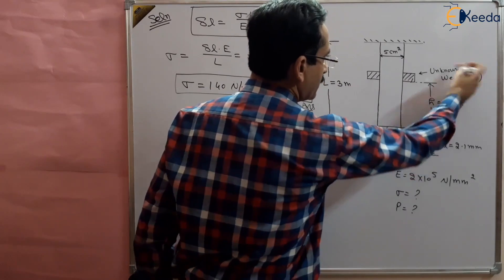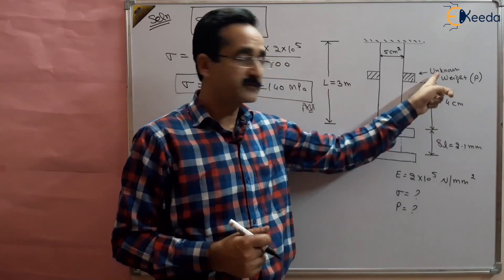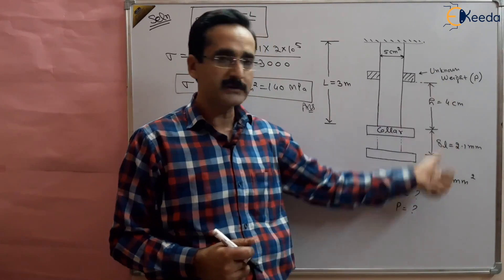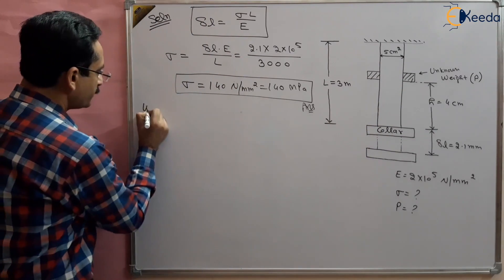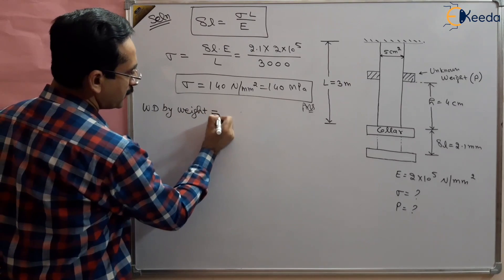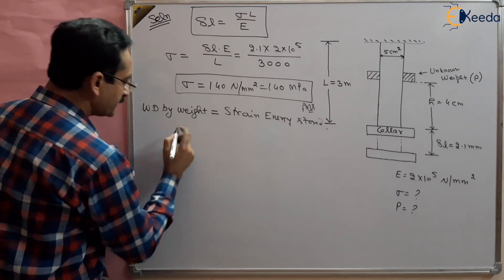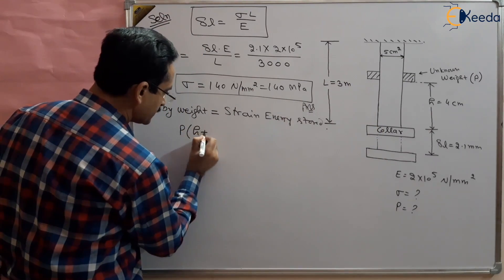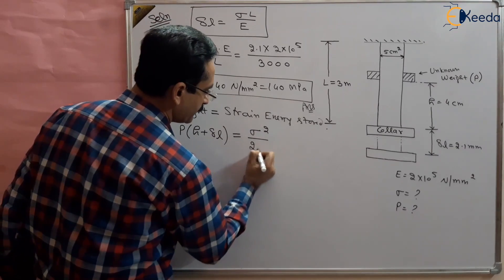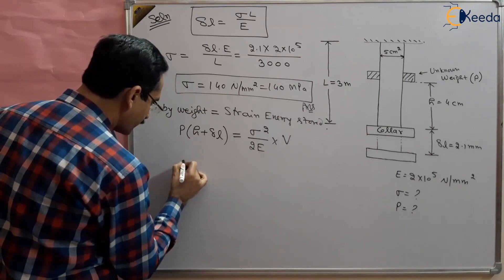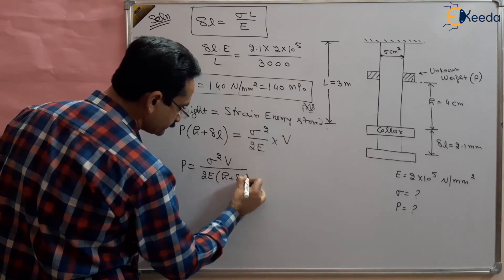For the second answer, we have to find the unknown weight W. We use the strain energy concept: when the weight falls, the work done by the weight equals W × (h + δl), and this work done is stored in the bar as strain energy. So work done by the weight equals strain energy stored in the bar. Strain energy equals σ²/2E multiplied by the volume of the bar.